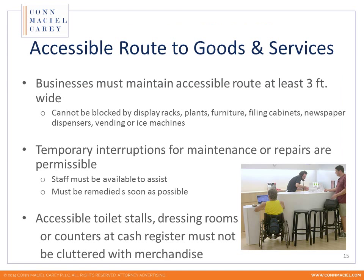When discussing with clients the top access violations that result in litigation, it's typically parking lots and path of travel. A study done by the California Commission on Disability Access, which has begun accumulating data on demand letters and complaints in response to a recent new law, identified a top ten list that included parking in its various aspects, ramps, path of travel, and restrooms — exactly the areas we already had in mind for this webinar.